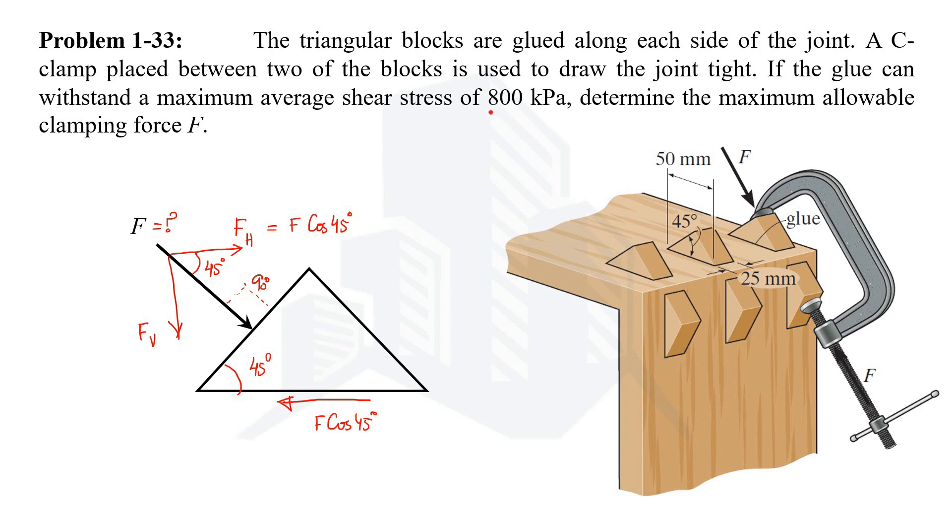Now we know the shear stress at this point and we can have the area because the dimensions are given. The length is 50 mm and width is 25 mm. Similarly we can have the same dimension for this triangular block as well. Let's extend this. So this side is 25 mm and this side is 50 mm.